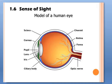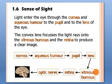Accommodation is the process through which the lens changes its shape in order to focus on objects at varying distances. This process is regulated by the ciliary muscles. In the sense of sight, light enters the eye through the cornea and aqueous humor, then passes through the pupil and the lens. The convex lens focuses the light rays through the vitreous humor onto the retina to produce a clear image.